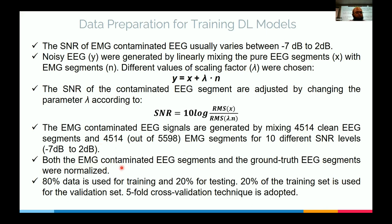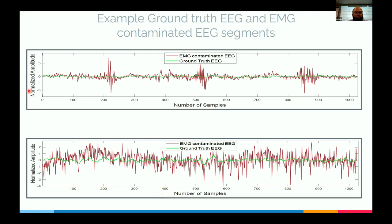We have both EMG-contaminated EEG and the ground truth clean EEG since we created the dataset ourselves. We then performed five-fold cross-validation. The green signal is the original ground truth EEG — very clean — whereas the red signal is the EMG-contaminated EEG. Zooming into the most corrupted portion shows how severely the EEG data is corrupted; a doctor receiving this data cannot understand what is happening.